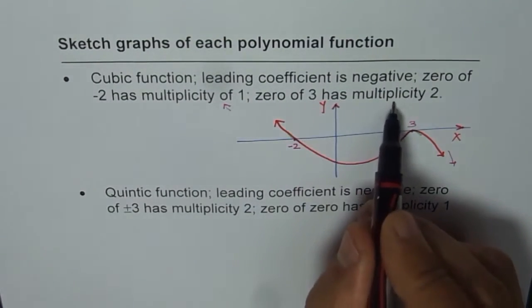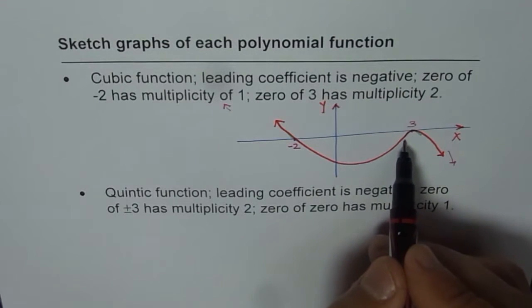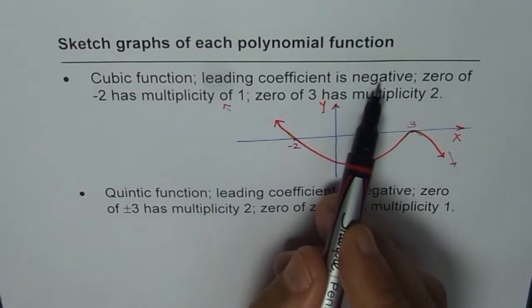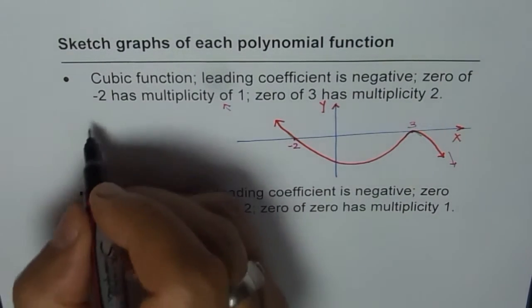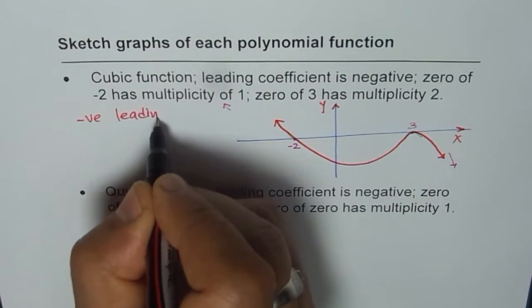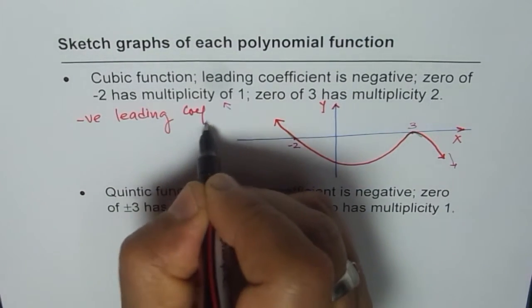Zero 3 has multiplicity 2, a quadratic zero, so it will turn like a parabola. Leading coefficient negative means end behavior. So negative leading coefficient means what?